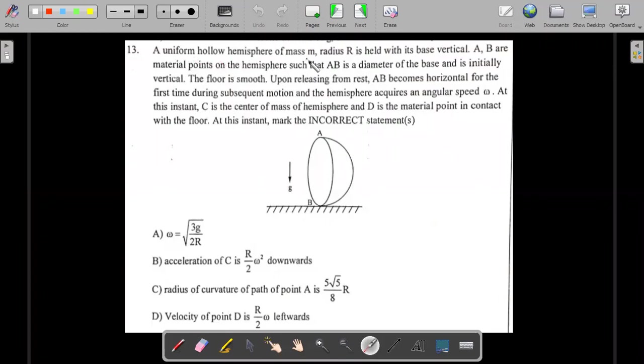A uniform hollow hemisphere of mass M and radius R is held with its base vertical. A and B are material points on the hemisphere such that AB is a diameter of the base and is initially vertical. The floor is smooth, very important wording that you need not miss here. Upon releasing from rest, AB becomes horizontal for the first time during the subsequent motion and the hemisphere acquires an angular velocity omega. At this instant C is the center of mass of this hemisphere and D is the material point in contact with the floor.